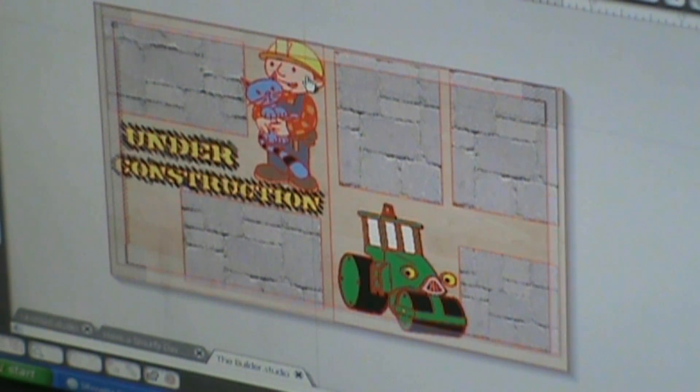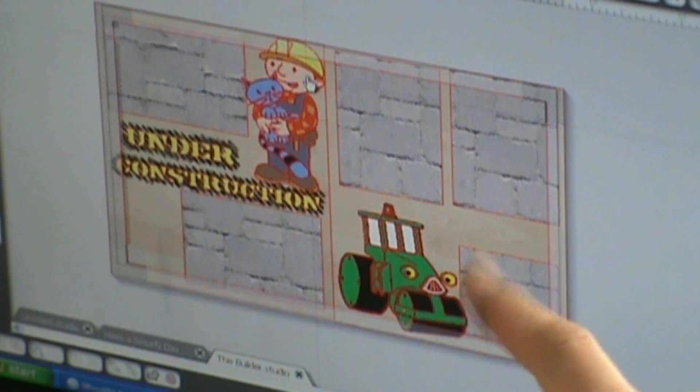I got those die cuts from a coloring page online. I did a general Bob the Builder search. The paper is what is in their fill option - you can fill it with a pattern. It's a wood grain, and then I have like a brick fill for the photo mat. Then I just printed them out and used my cutter to cut them out.